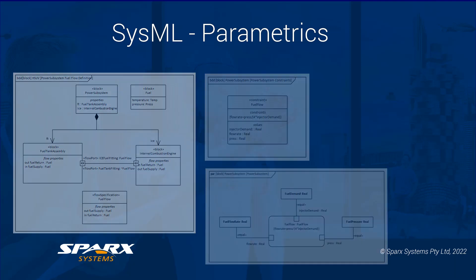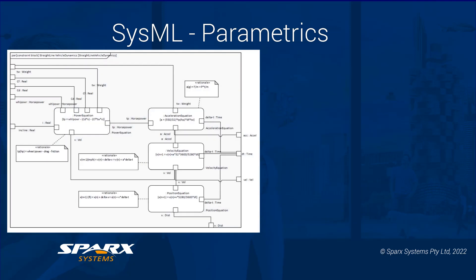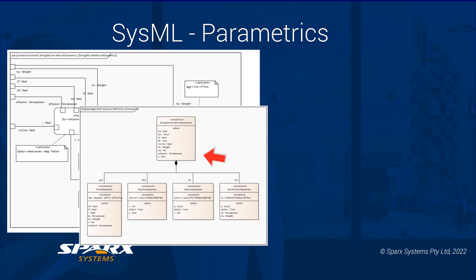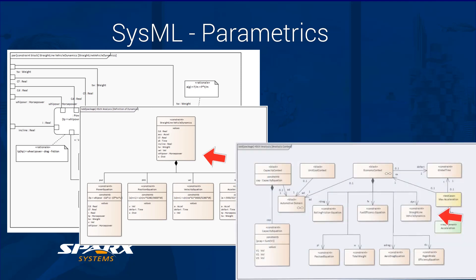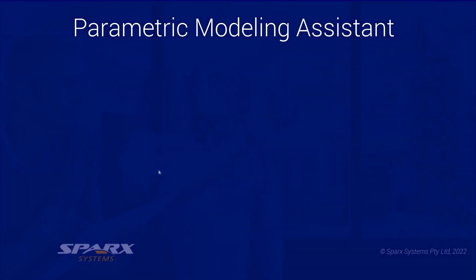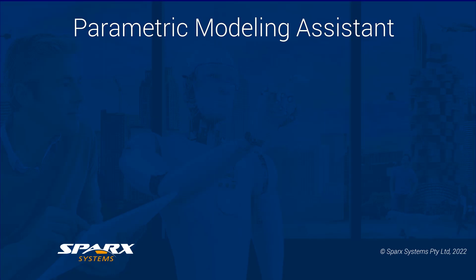For a more complex example, we look at the straight line vehicle dynamics, again defined in the constraints and derived from the HSUV block definition diagram. Like the convenient tools to help you create constraint blocks, Enterprise Architect also provides a process to set up parametric diagrams by parsing mathematical equations to create parameter binding connectors.